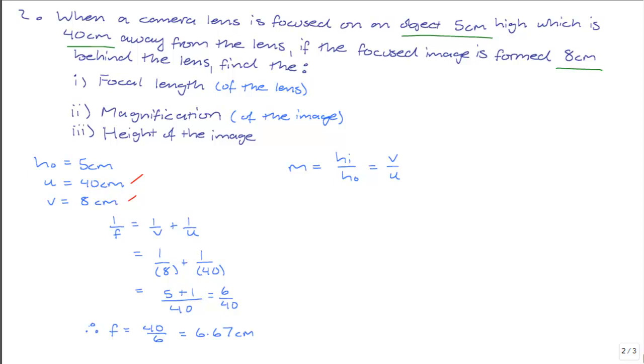We know the magnification is V over U. So by substitution of the values that we have, we know that the magnification M is equal to 8 divided by 40.